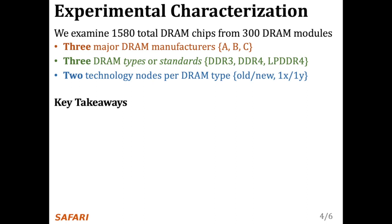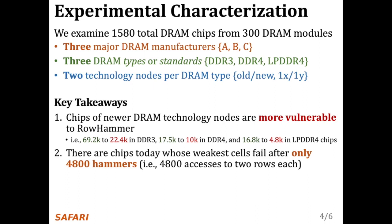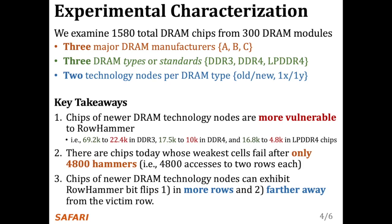From our experimental characterization, we make three key observations. First, chips of newer DRAM technology nodes are more vulnerable to rowhammer. Second, there are chips today whose weakest cells fail after only 4,800 hammers, or 4,800 accesses to two rows each. And third, chips of newer DRAM technology nodes can exhibit rowhammer bitflips in more rows and farther away from the victim row.